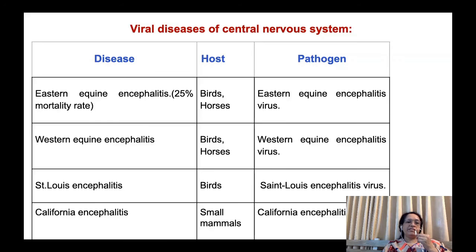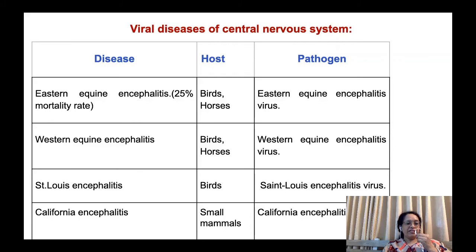Specific viral encephalitides include: Eastern equine encephalitis, caused by eastern equine encephalitis virus, with birds and horses as hosts and a mortality rate up to 25%; western equine encephalitis, caused by western equine encephalitis virus, again with birds and horses as hosts; St. Louis encephalitis, caused by St. Louis encephalitis virus, with birds as hosts; and California encephalitis, caused by California encephalitis virus, where small mammals are the reservoir.